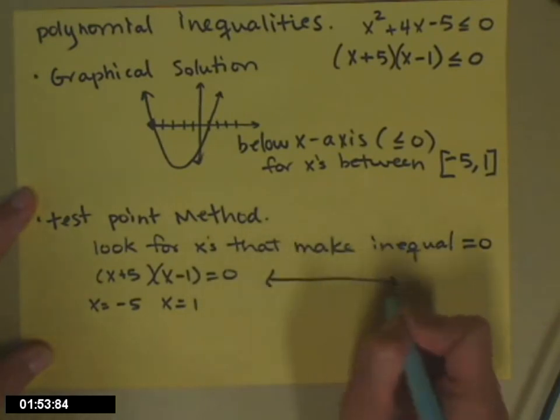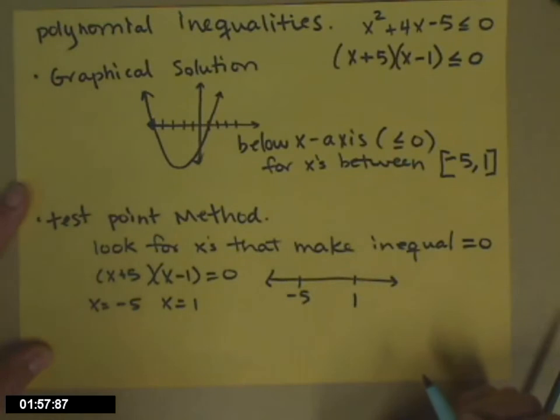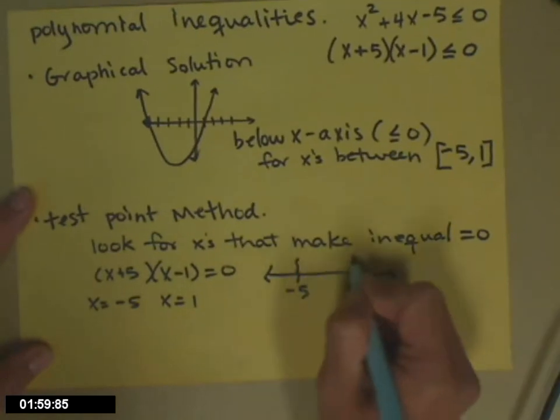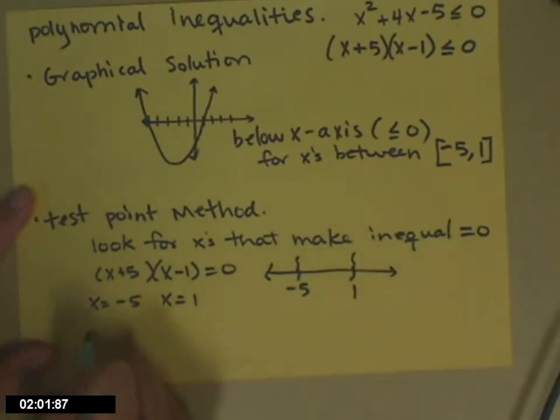What that does then is it divides the number line into intervals. So you have the interval from negative infinity to negative five, from negative five to one, and from one to infinity.